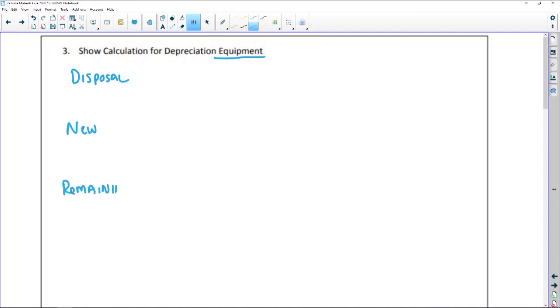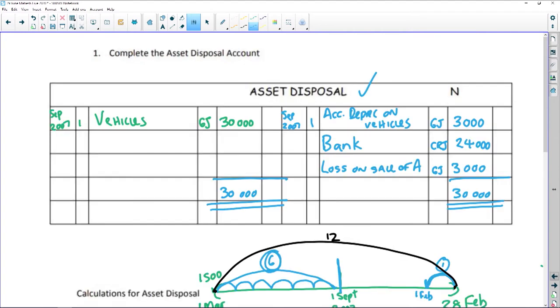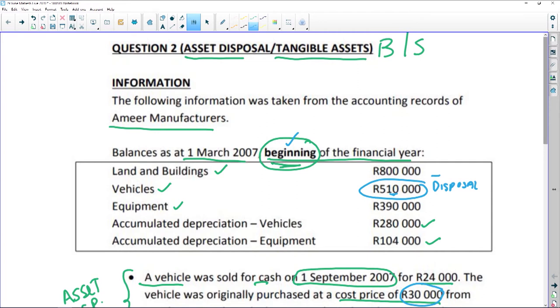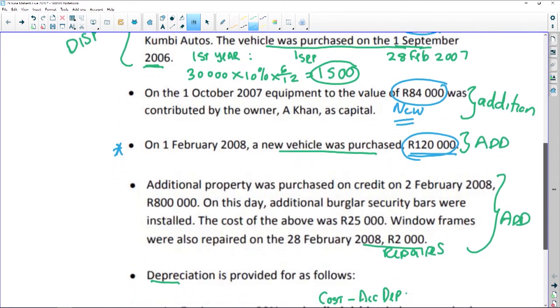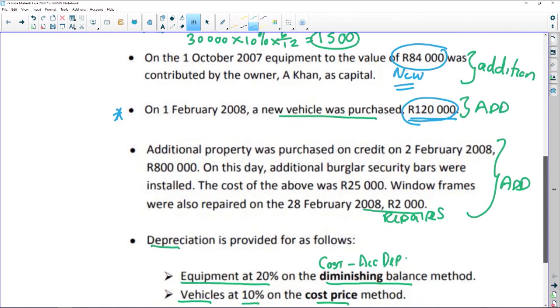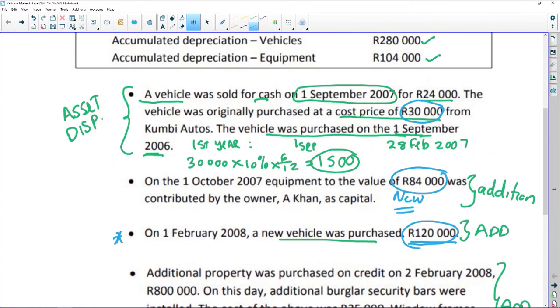Let's go back to our info. Now we're focusing on equipment. I can see on the 1st of October 2007, equipment to the value of 84,000 was contributed by the owner. So clearly that 84,000 is my new equipment. If I scroll through the rest of the information, there is absolutely nothing about selling any equipment, so clearly there's no disposal.